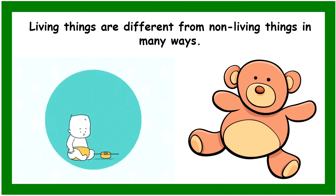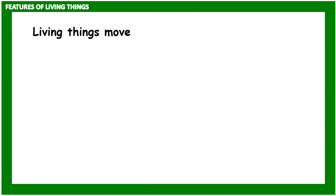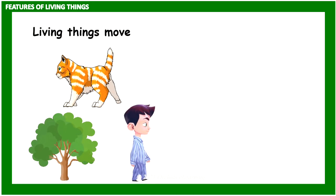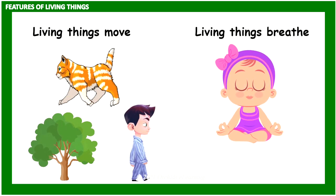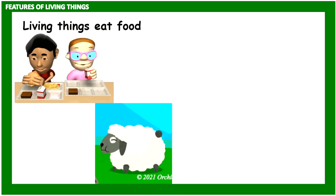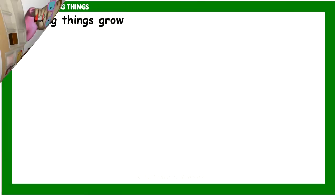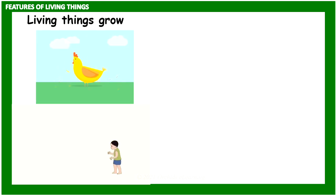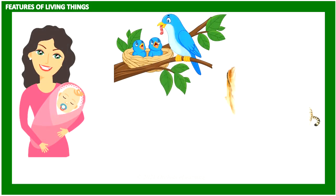Living things are different from non-living things in many ways. Let us learn the features of living things. Living things move. Living things breathe. Living things eat food. Living things feel. Living things grow. Living things reproduce — reproduce means giving birth to young ones.